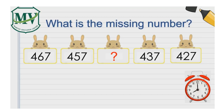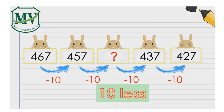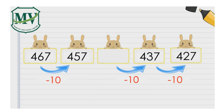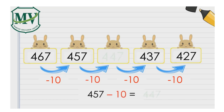What is the missing number? The number pattern that applies here is 10 less. 467 minus 10 is 457. 457 minus 10 is 447.